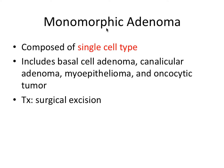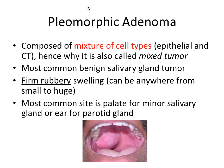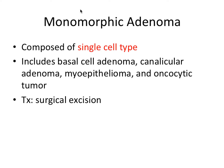Next we have monomorphic adenoma, which is composed of a single cell type. We can link this together: pleomorphic means more forms or shapes and involves a mixture of cell types, whereas monomorphic means one shape or one form and involves one cell type. So if you remember pleomorphic and monomorphic, that can help make these two things pretty easy to remember.